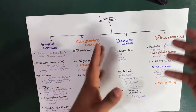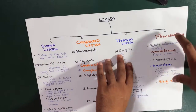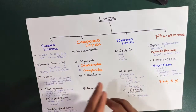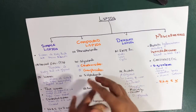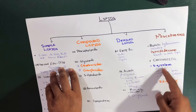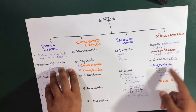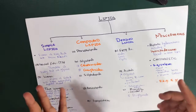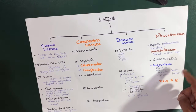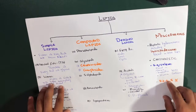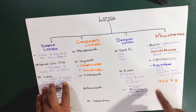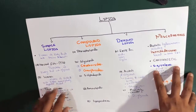Miscellaneous lipids are aliphatic hydrocarbons. They include isoctadecane, found in liver fat, carotenoids, and squalene, which is found in the mammalian liver and human sebum — the secretion of the sebaceous gland. Squalene is also associated with vitamins E and K.